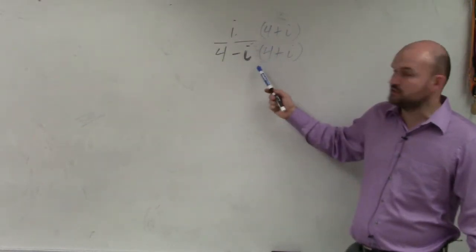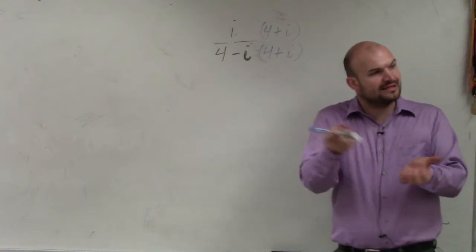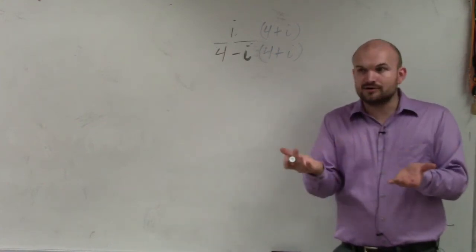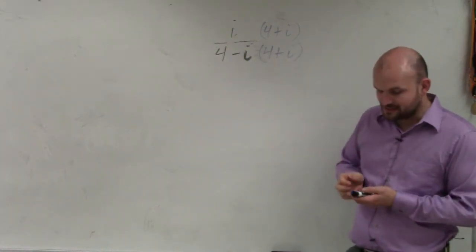I get 4 times 4 is 4 squared, 4 times i is 4i, 4 times negative i is negative 4i. So the positive 4i and the negative 4i add to 0. And then negative i times negative i is negative i squared.